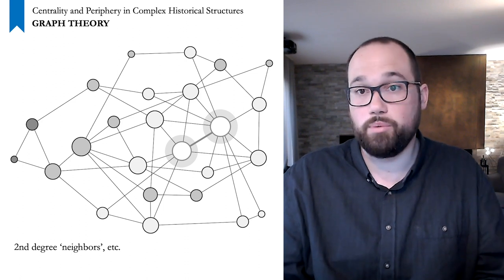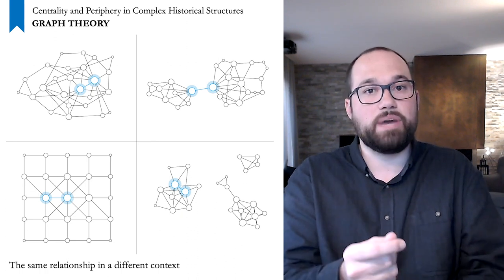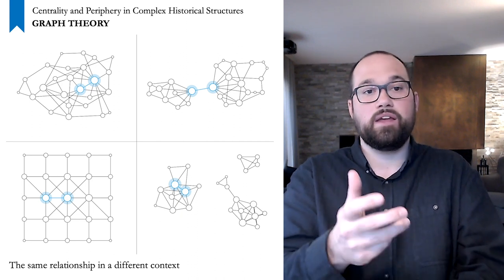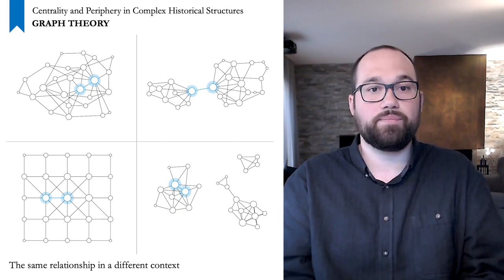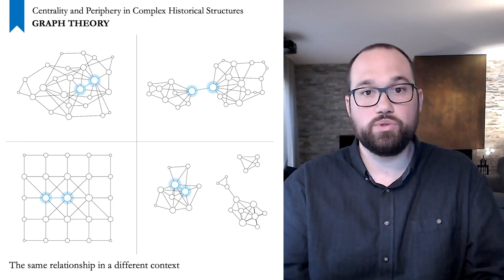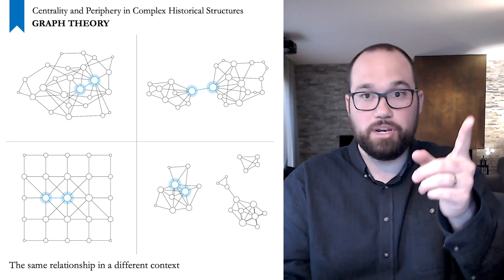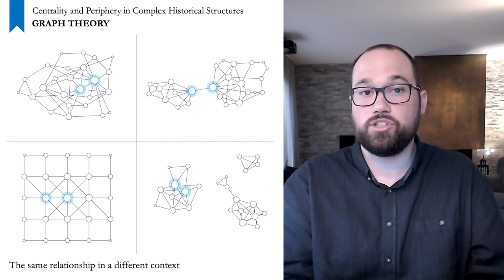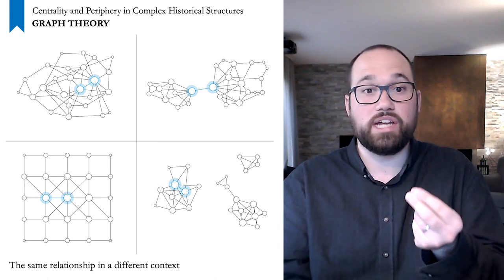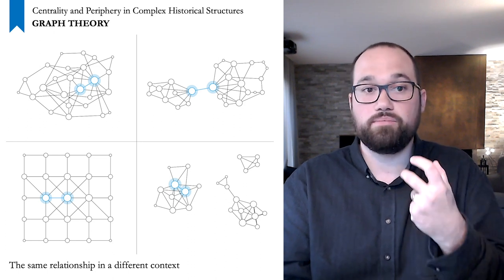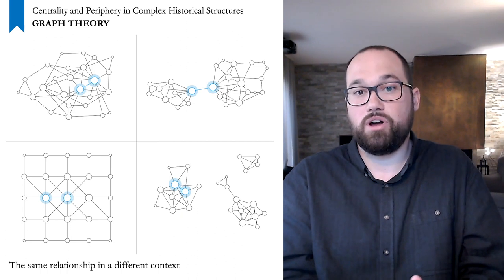To make you understand how important context is for this relationship, these four graphs all contain exactly the same number of people and relationships, but they are not distributed in the same way. The relationship between our two scientists, highlighted in blue, takes on a completely different meaning if these ten letters are exchanged at the center of a network built around our two people, or if they connect two groups that have nothing else in common, or if this relationship takes place in a group not connected to other groups. The content of these ten letters never changes, but their structural context is so different that we can give them another meaning or status.